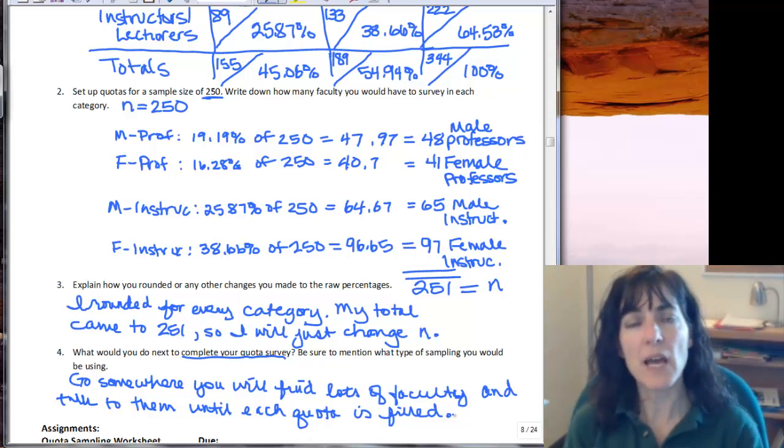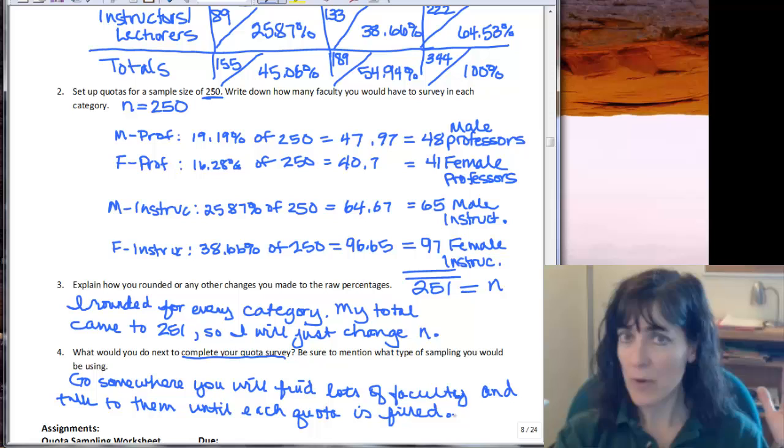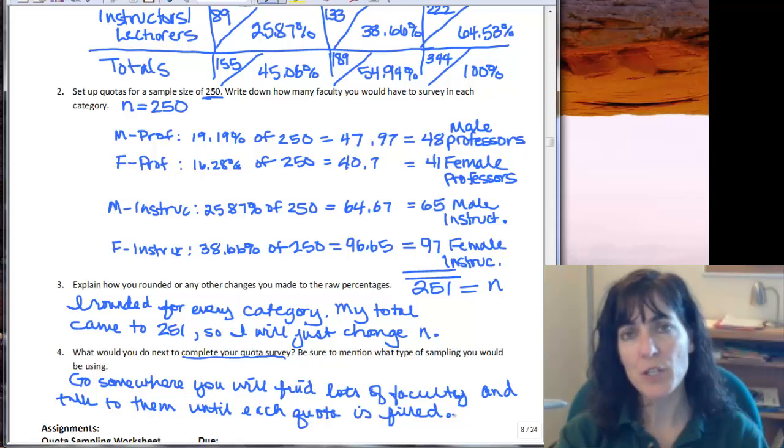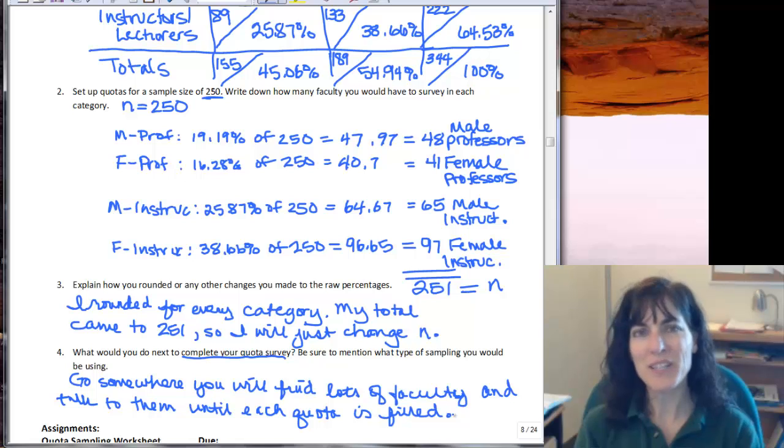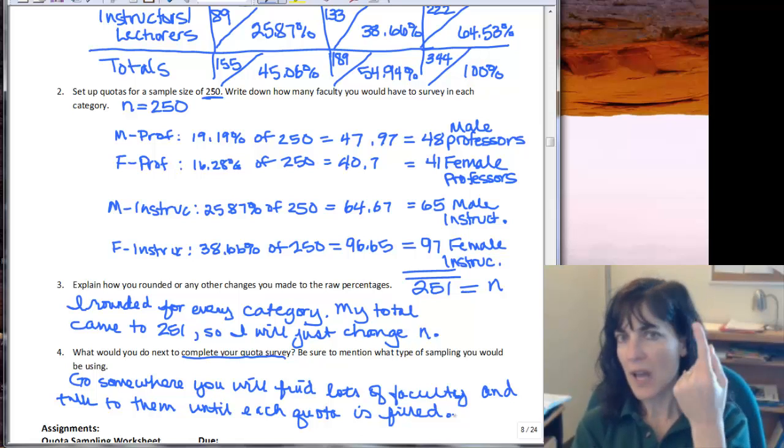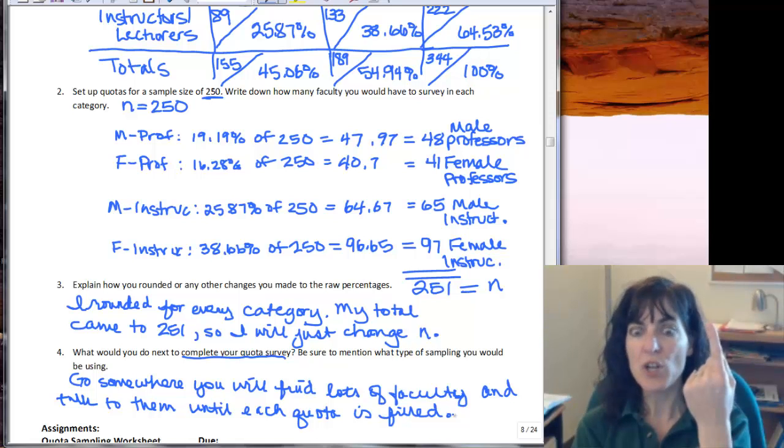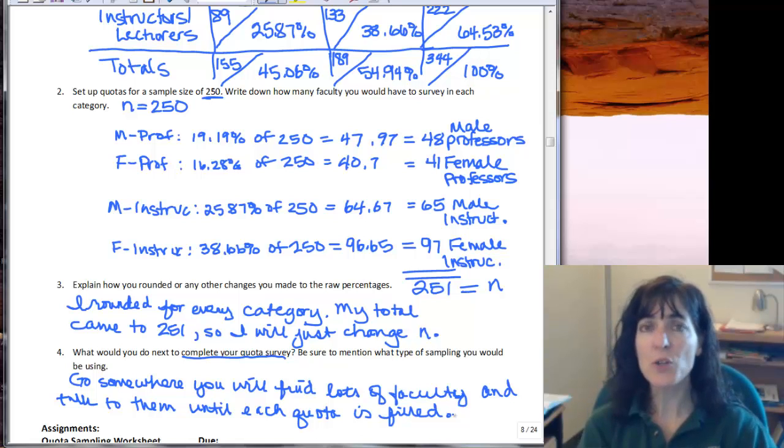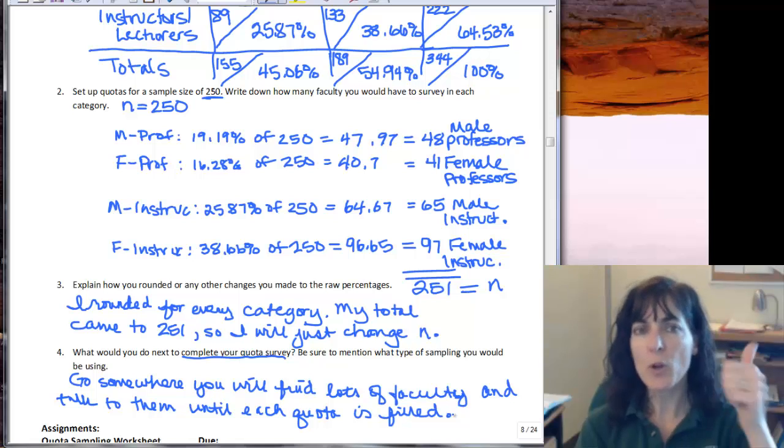And so what that means is that once I've talked to the 48 male professors and say I run into another male professor, I just thank him for his time and I don't take any information from him because I only wanted 48 to keep my quotas right. So say I go, there's a few places I would go if I wanted to talk to faculty members. I would go to the cafeteria at lunch time and I would just talk to any person who walks by and say are you a faculty member, and then I would ask them what their ranking was. And then if I'd already filled the quota that they belong to I would just thank them, send them on their way. And if they were in a quota that I hadn't filled yet then I would ask them the questions I was going to survey with.